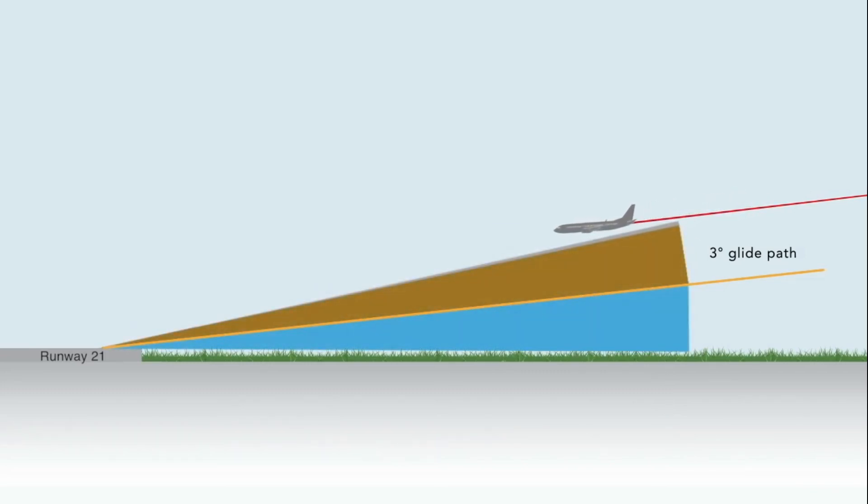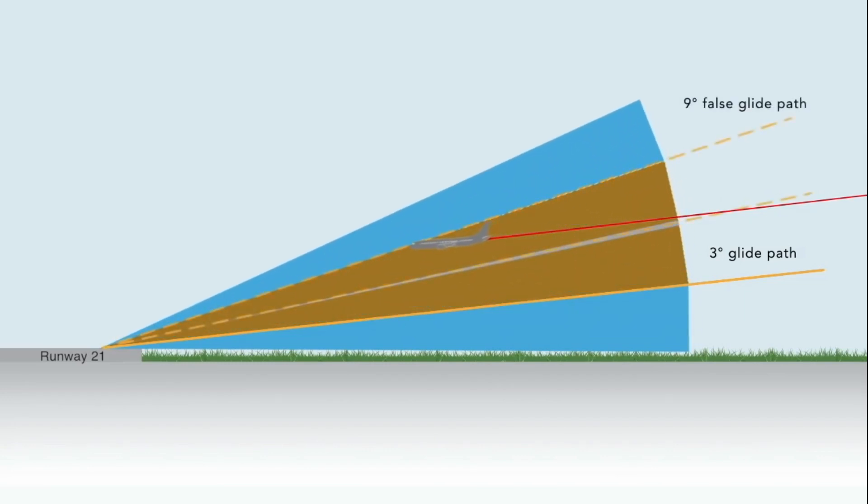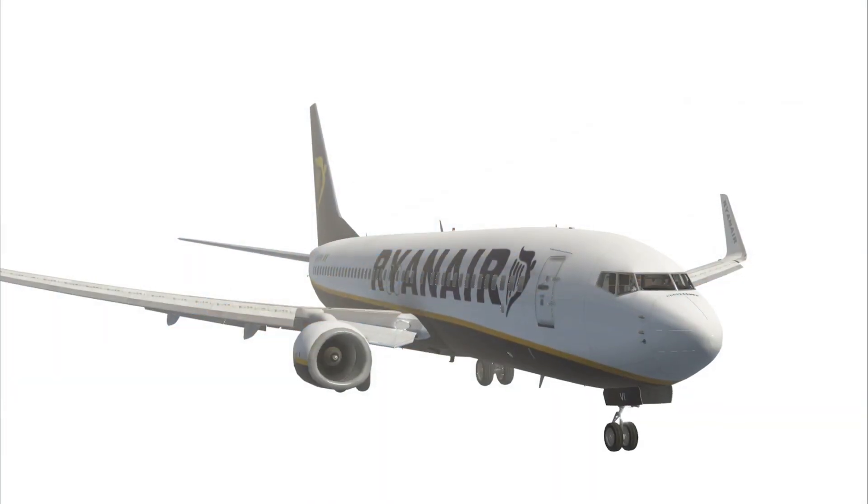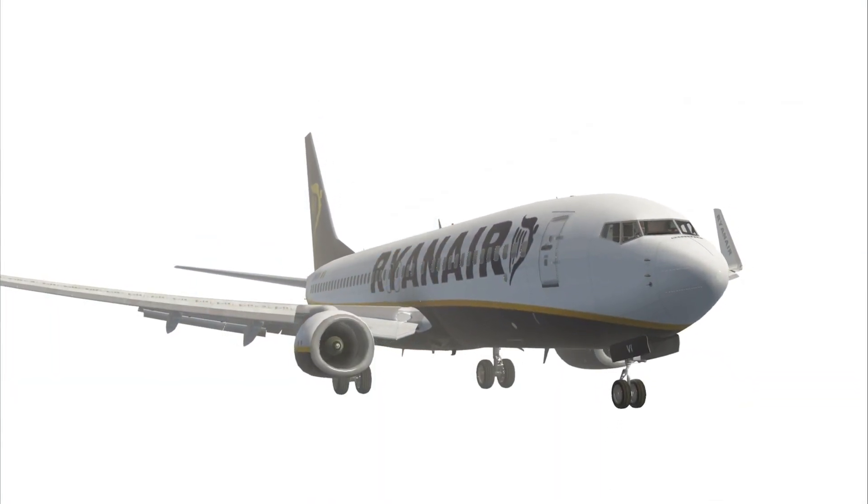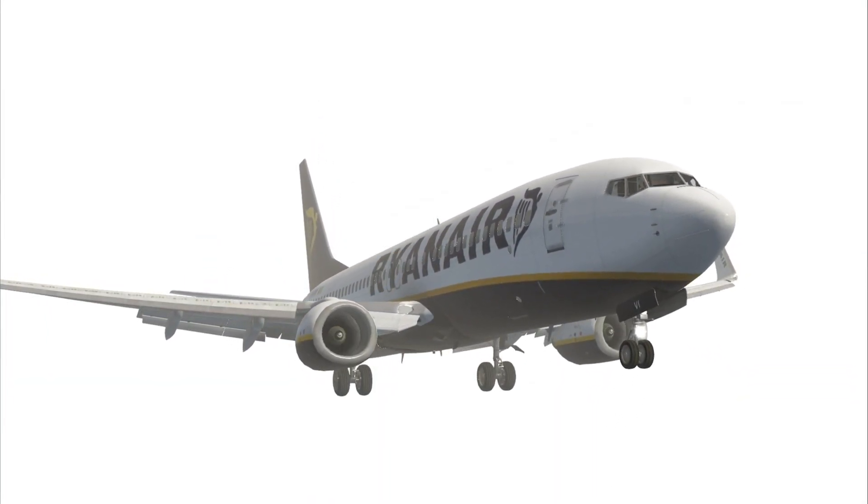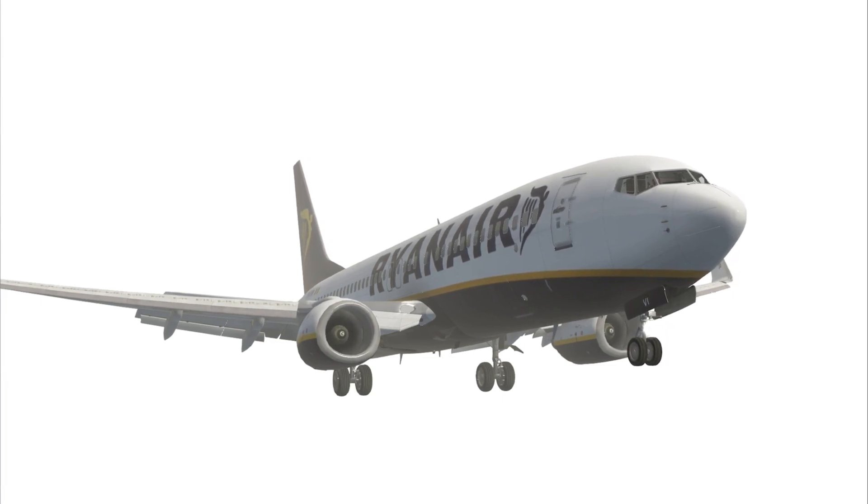During this approach, a false glide slope was captured. After the stick shaker warning, the crew increased the airspeed and executed a go-around. The subsequent approach and landing was uneventful.